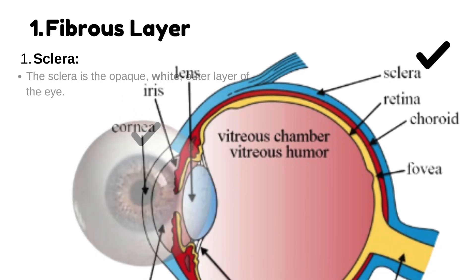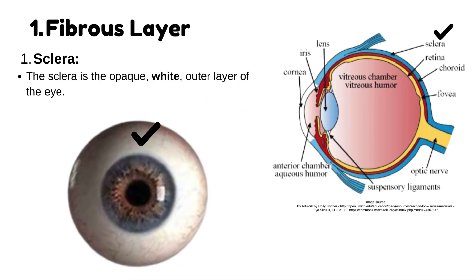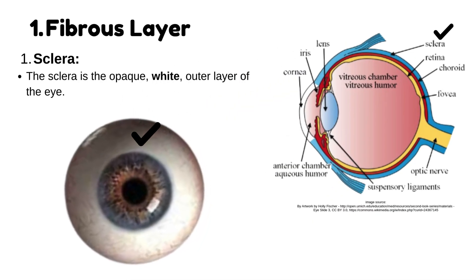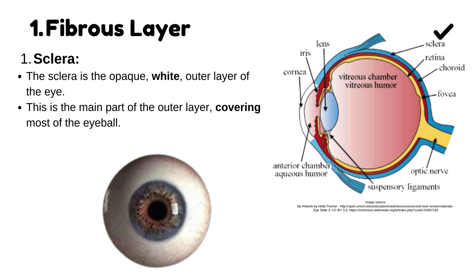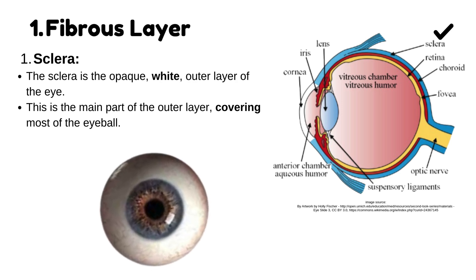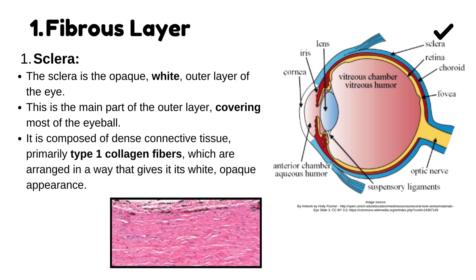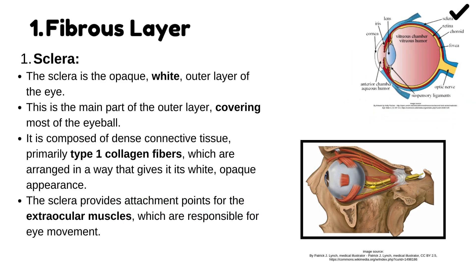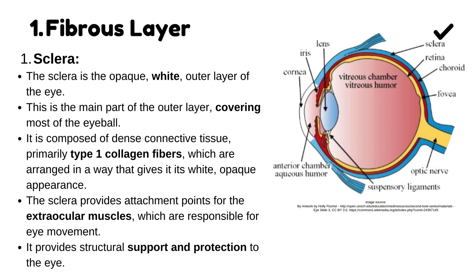The sclera is the opaque, white outer layer of the eye. It is the main part of the outer layer, covering most of the eyeball. It is composed of dense connective tissue, primarily type 1 collagen fibers, which are arranged in a way that gives it its white, opaque appearance. The sclera provides attachment points for the extraocular muscles, which are responsible for eye movement, and provides structural support and protection to the eye.